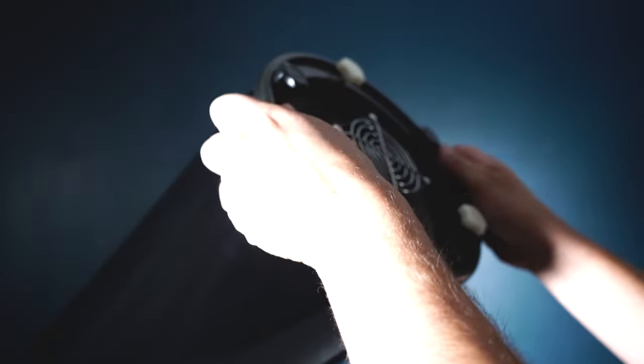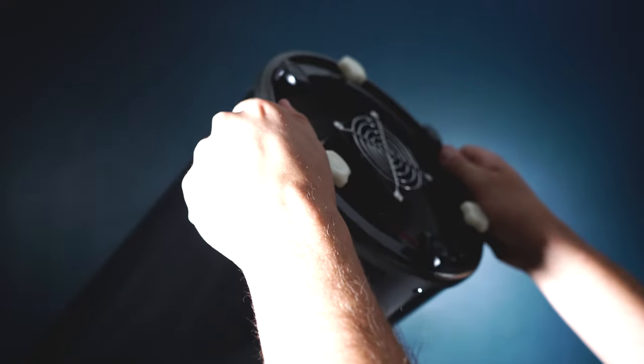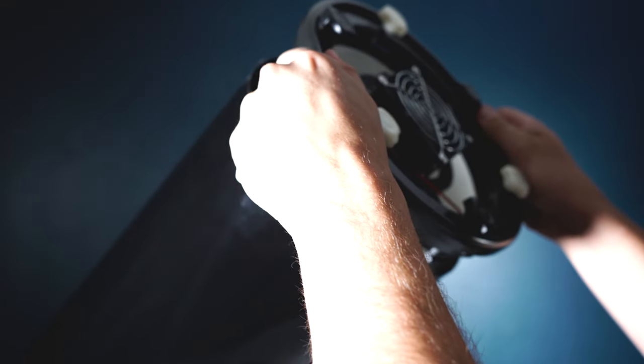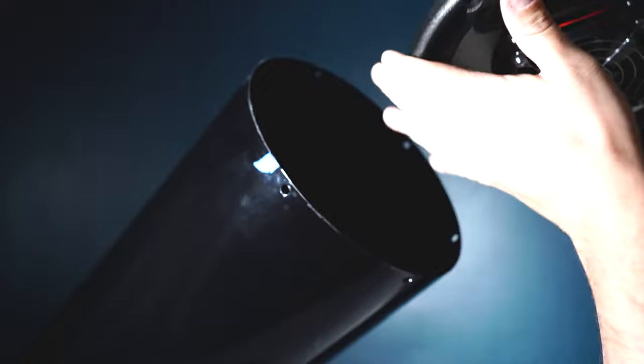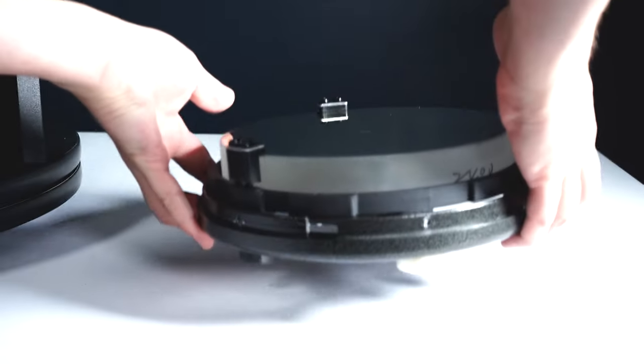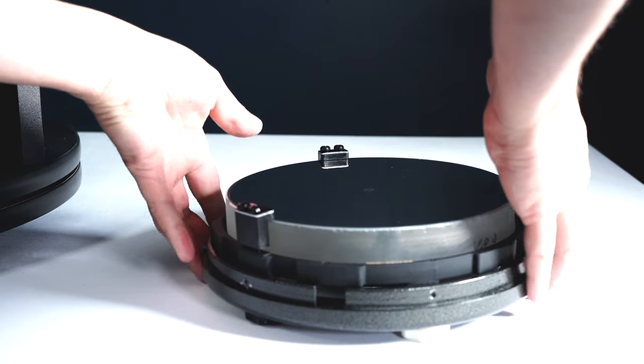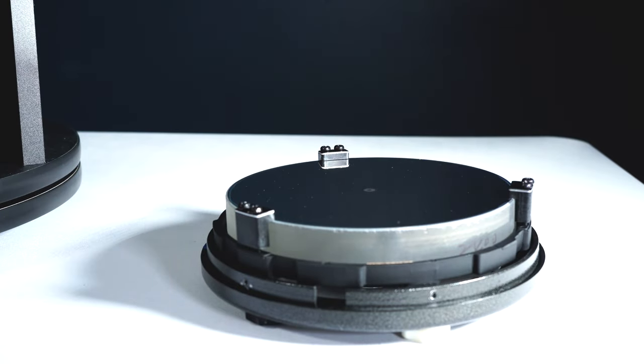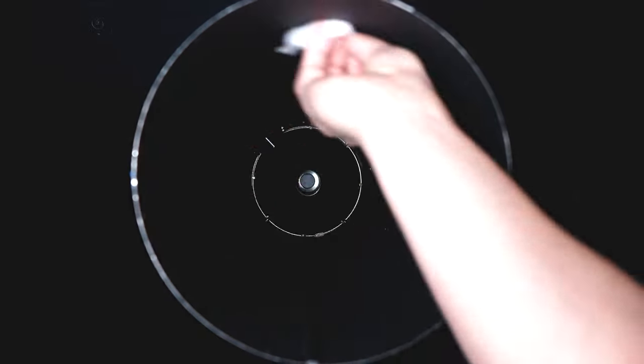Next step we want to clean the inside of the OTA with the provided cleaning wipes. Again this is very important as you want to have a clean surface so your flocking material really sticks to the inside of your OTA.